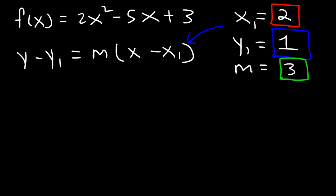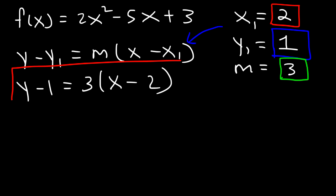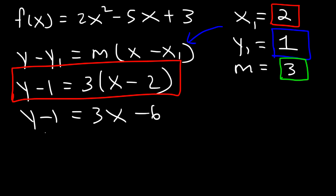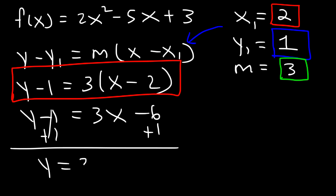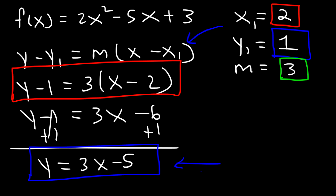Now let's plug in what we have so that we can write the equation of the tangent line. So it's y minus 1, which is equal to 3 times x minus 2. This is the answer in point-slope form. But let's get it in slope-intercept form and solve for y. Let's distribute the 3 first, so it's going to be 3x minus 6. Then let's add 1 to both sides — negative 6 plus 1 is negative 5. So the equation of the tangent line in slope-intercept form is y equals 3x minus 5.